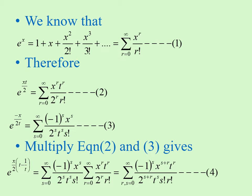Therefore, we can write e power xt by 2 is equal to summation r is equal to 0 to infinity, x power r times t power r divided by 2 power r times r factorial. Similarly, e power minus x by 2t is equal to summation s is equal to 0 to infinity, minus 1 whole power s times x power s divided by 2 power s times t power s times s factorial.